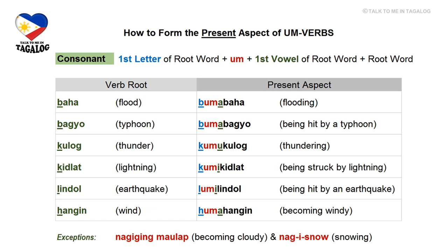Next is bagyo, which follows the same pattern: ba + um + a + bagyo = bumabagyo, meaning 'being hit by a typhoon.' Next, kulog: present aspect is kumukulog, meaning 'thundering.' Kidlat: present aspect is kumikidlat, meaning 'being struck by lightning.' Lindol: present aspect is lumilindol, meaning 'being hit by an earthquake.'